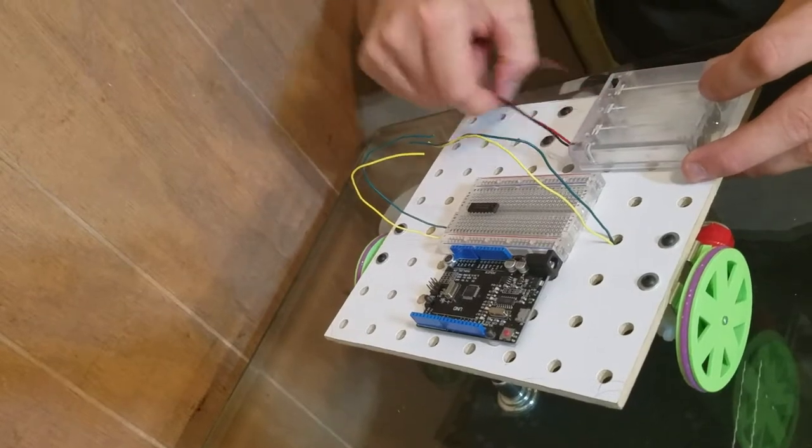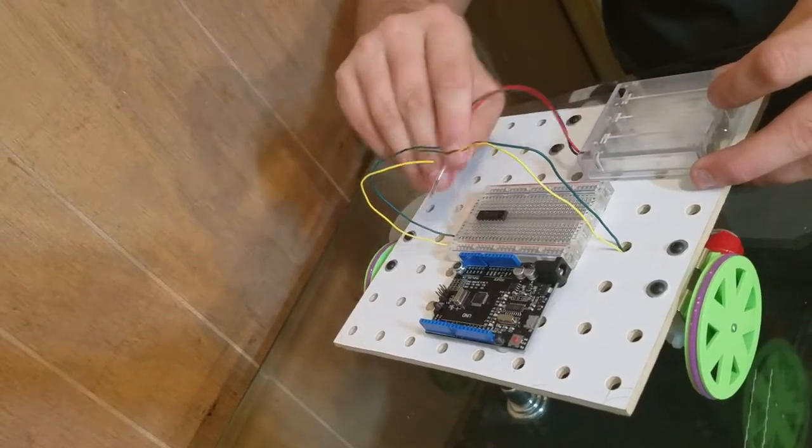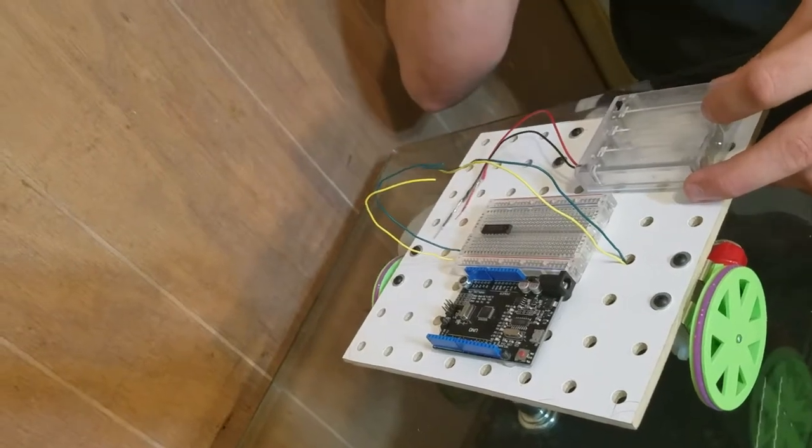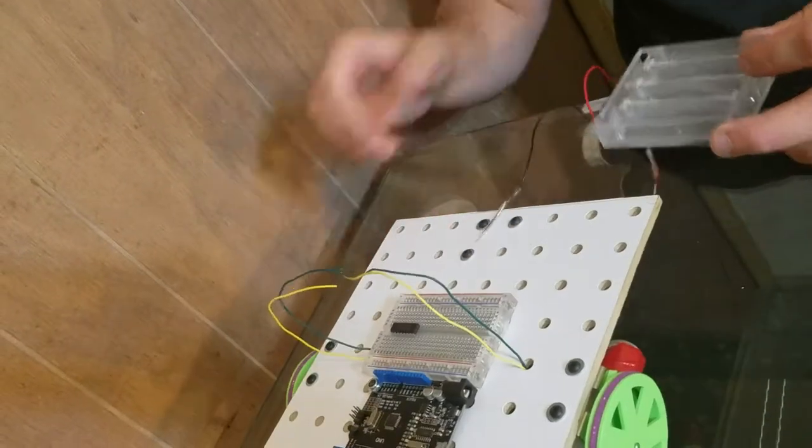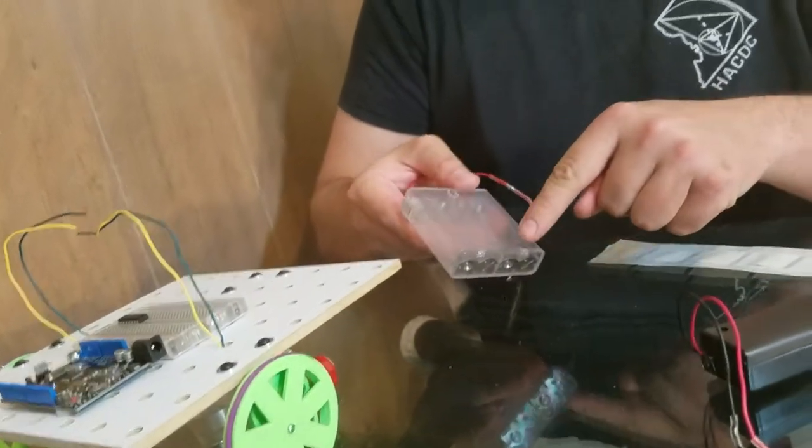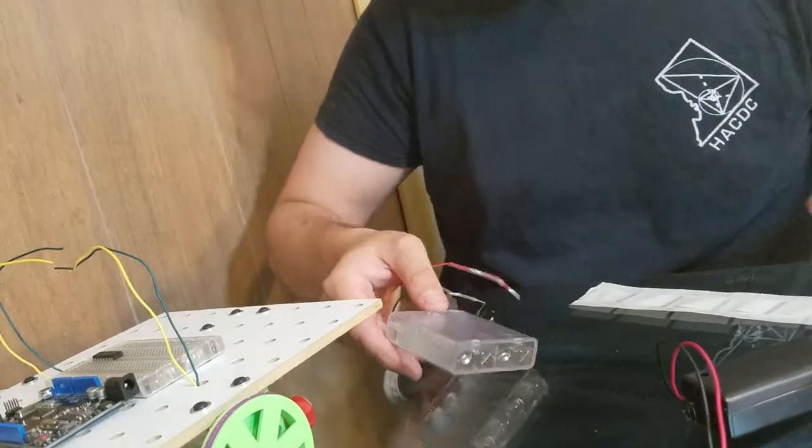We also want these wires to be towards the Arduino because they're going to go over there and plug into things. We're going to do that by attaching glue dots on the other side.